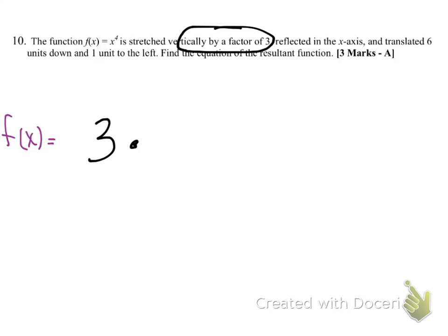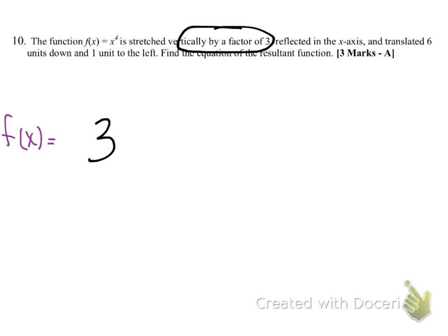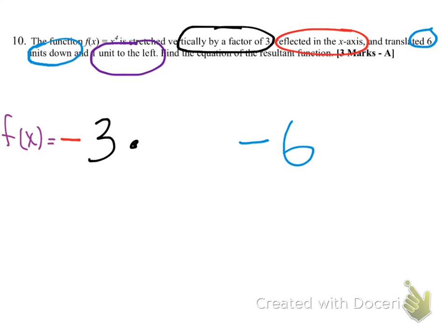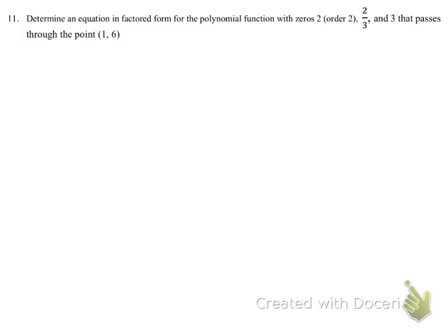For the next question, x to the fourth is stretched vertically by a factor of three — that comes from this three. Then it gets reflected in the x-axis, which is a vertical reflection caused by this negative. Then it gets translated six units down, so we get minus six at the end, and one unit to the left, so we get x plus one. One thing people left out: the original function was x to the fourth, so we must have that exponent of four outside of the x plus one.